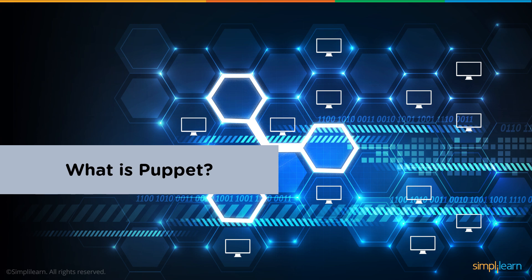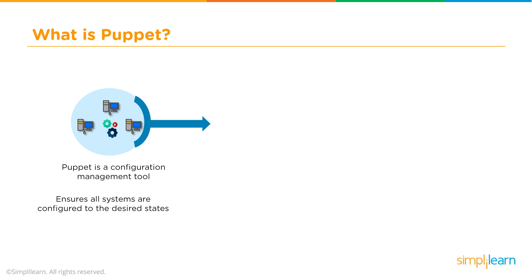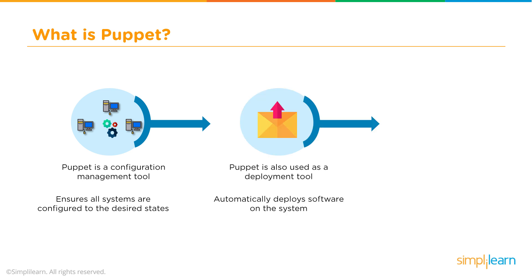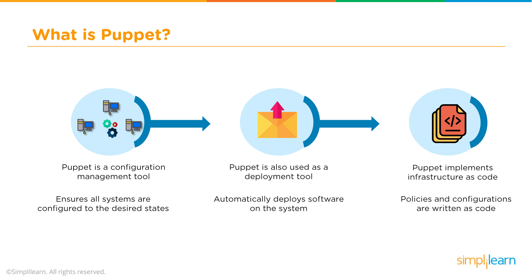So let's dig deeper into what Puppet actually is. Puppet is a configuration management tool, similar to tools like Chef that you may already be familiar with. It ensures that all your systems are configured to a desired and predictable state. Puppet can also be used as a deployment tool for software — automatically deploying to all of your systems or to specific systems. This is all done with code, which means you can test the environment and have a guarantee that the environment you want is written and deployed accurately.